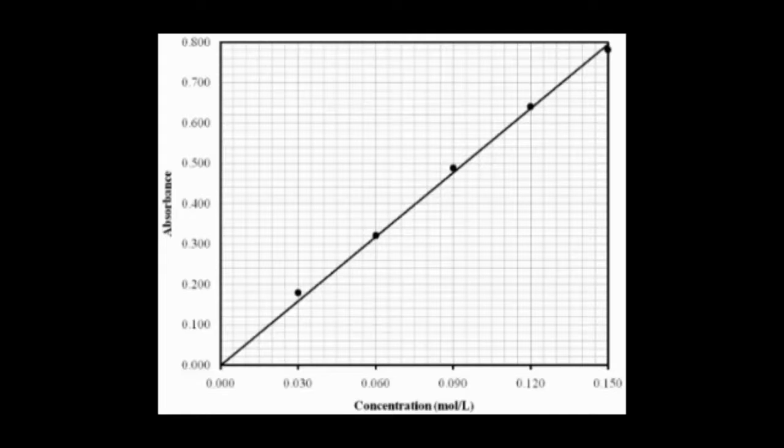In order to determine the concentration of your unknown sample, find that absorbance along the y-axis and draw a line from the y-axis to the trend line and draw a line straight down. Where this line hits the x-axis is the concentration of your unknown.